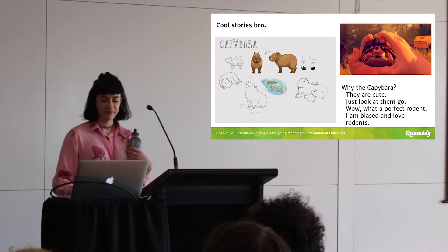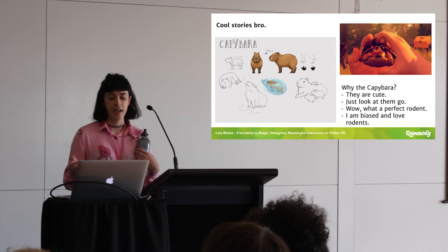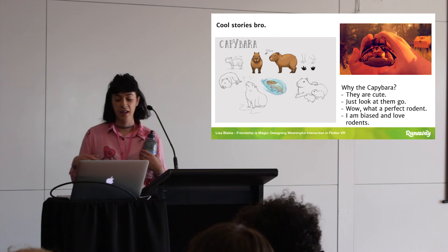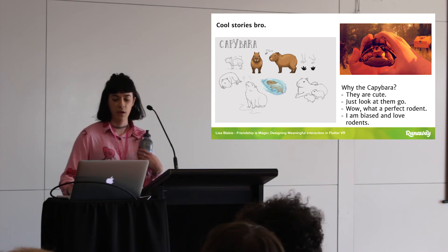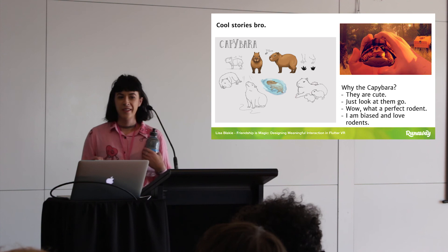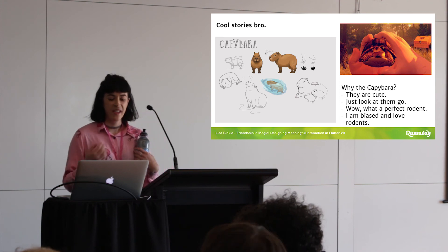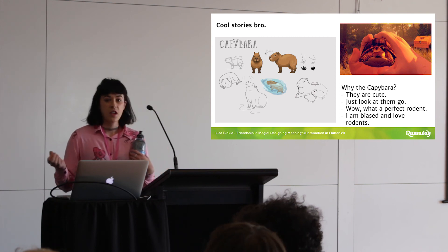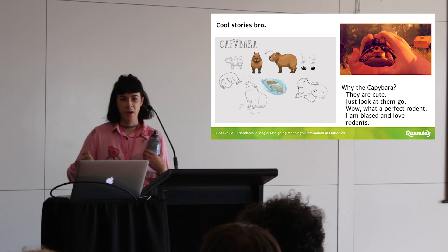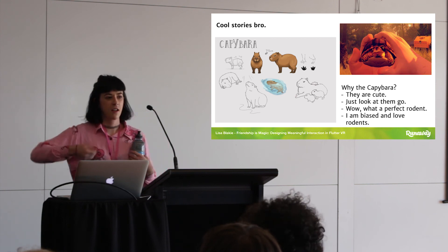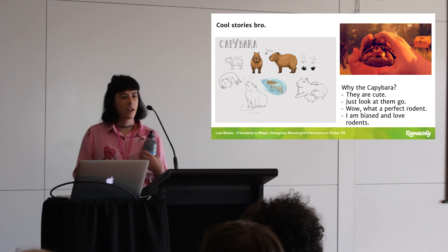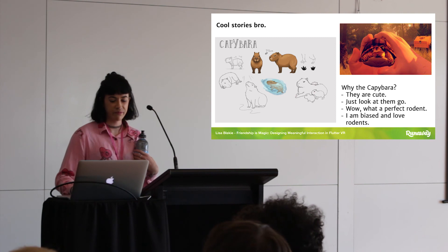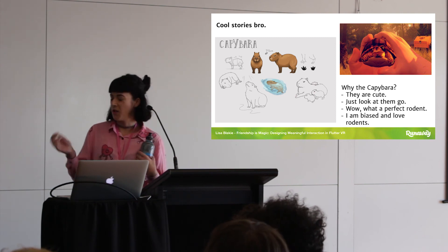There's also the chance that people occasionally want to manipulate things because you want to test games. At the beginning of Flutter VR we actually had items you could pick up like a knife, and people would just walk around in playtesting doing this. So we got rid of all of that because they were going to try to use it on the capybara.